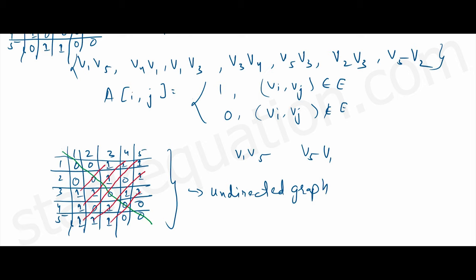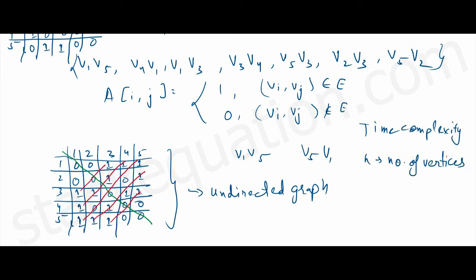An adjacency matrix requires O(n²) space. If n is the number of vertices, the space complexity of an adjacency matrix is O(n²), and this is irrespective of the number of edges in the graph.